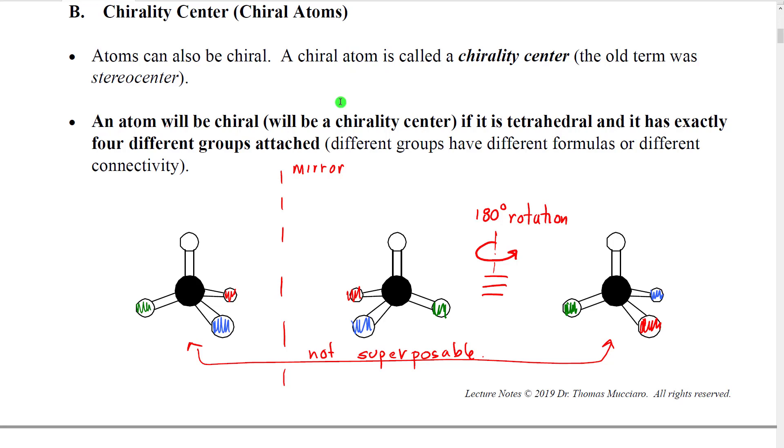An atom will be chiral, will be a chirality center, if it is tetrahedral and has exactly four different groups attached. By different groups what we mean is the groups at the end of the four bonds have different formulas or different connectivity, different atoms in them, and so forth.